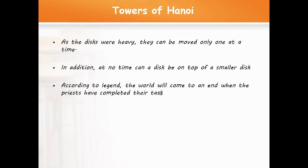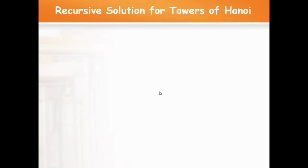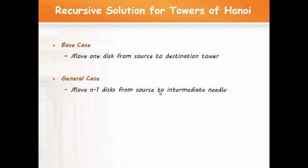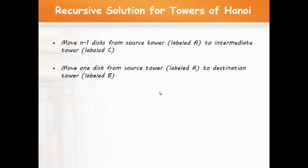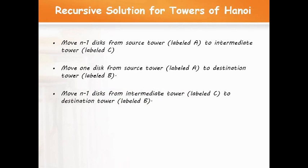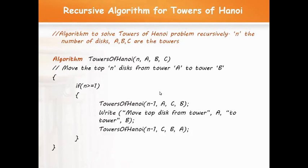In this problem, we identify the base case and the general case. The base case is moving one disc from the source tower to the destination tower. The general case is moving n minus 1 discs from the source tower to the intermediate tower. The solution is: move n minus 1 discs from source to intermediate tower C, then move the nth disc from source to destination tower B, then move the n minus 1 discs from tower C to destination tower B.